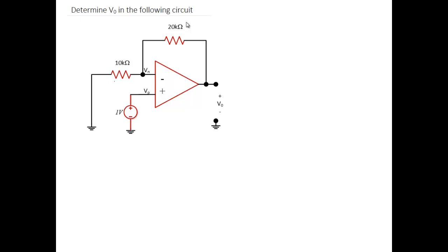Ok, now we would like to solve a problem that involves an op amp in the circuit. We are given a circuit here that has a 20K ohm resistance in the feedback path and a 10K ohm resistor in the forward path. It also has a 1V source that is connected to the positive input pin of the op amp.